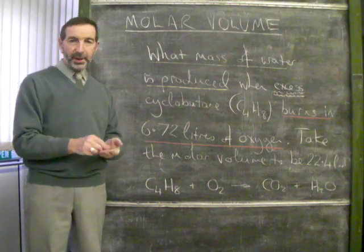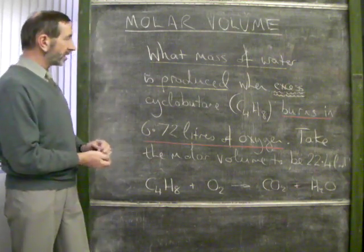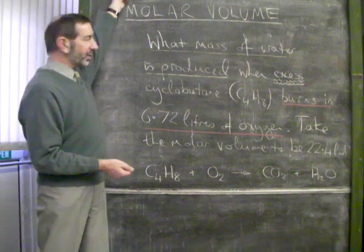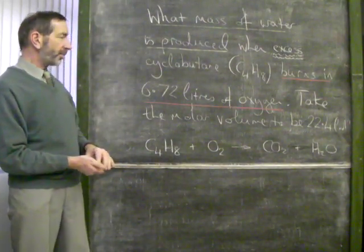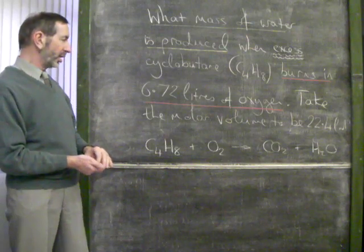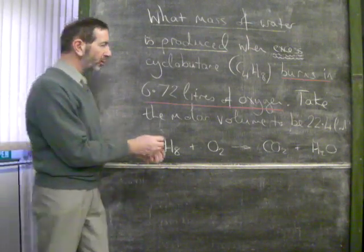Here's another molar volume calculation. This statement says, what mass of water is produced when excess cyclobutane burns in 6.72 litres of oxygen? Take the molar volume to be 22.4 litres.